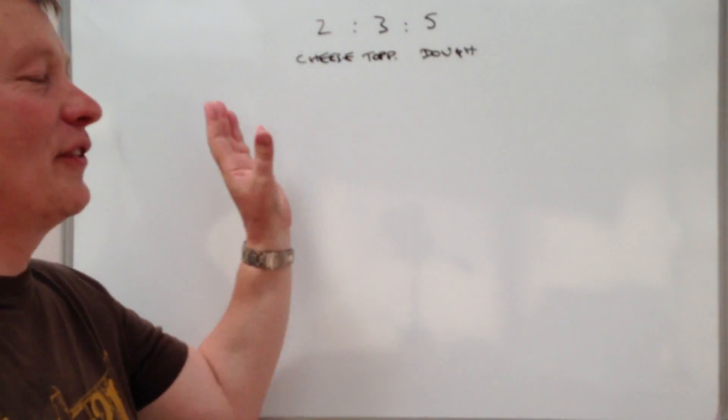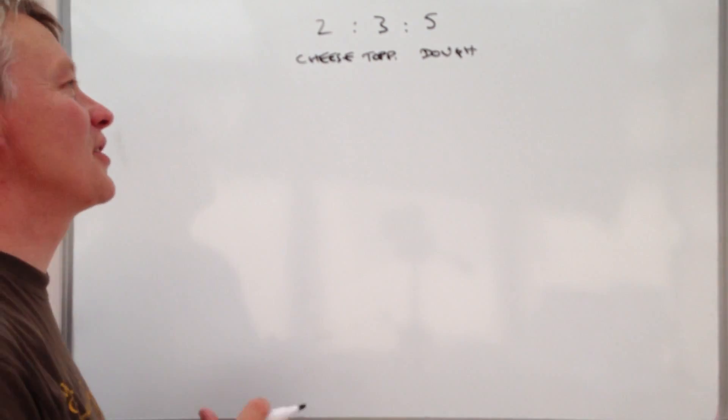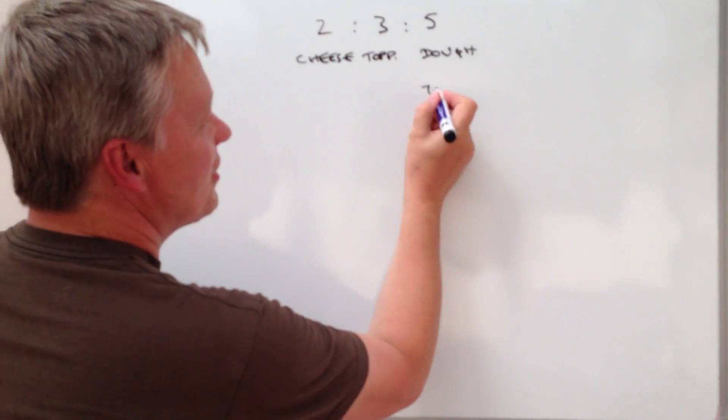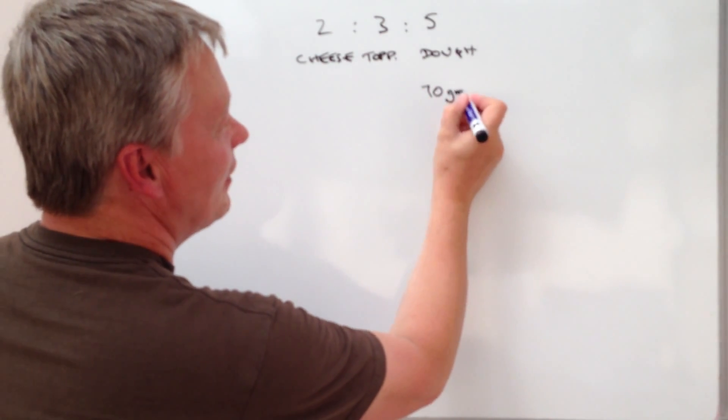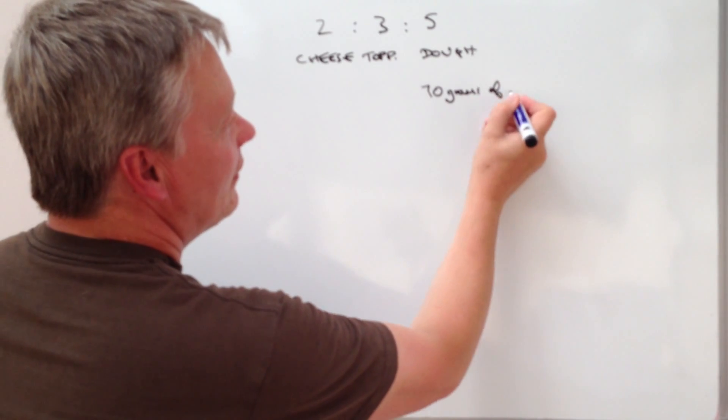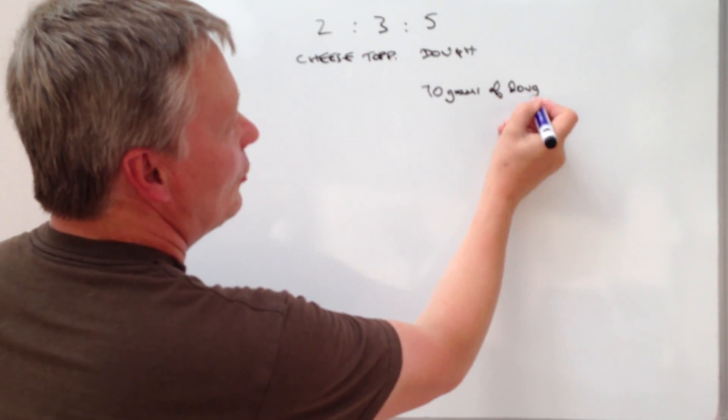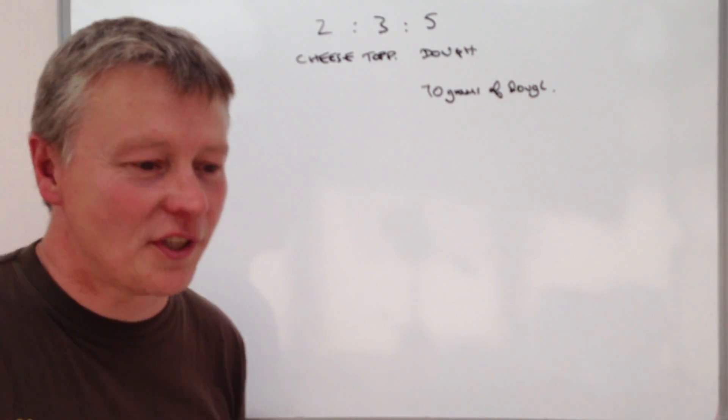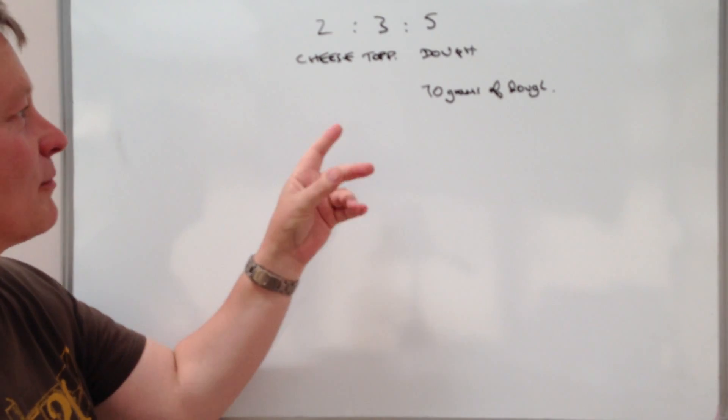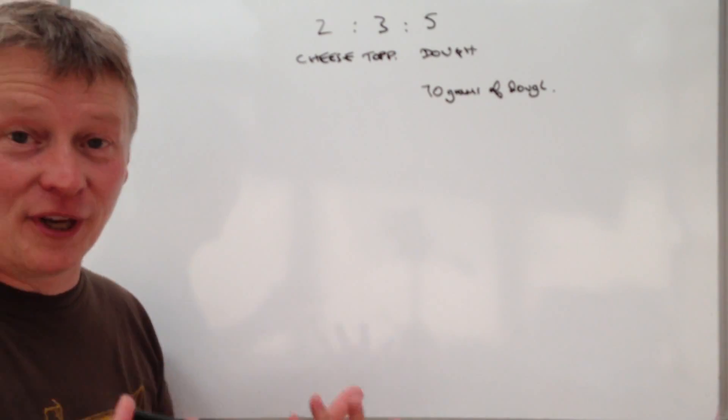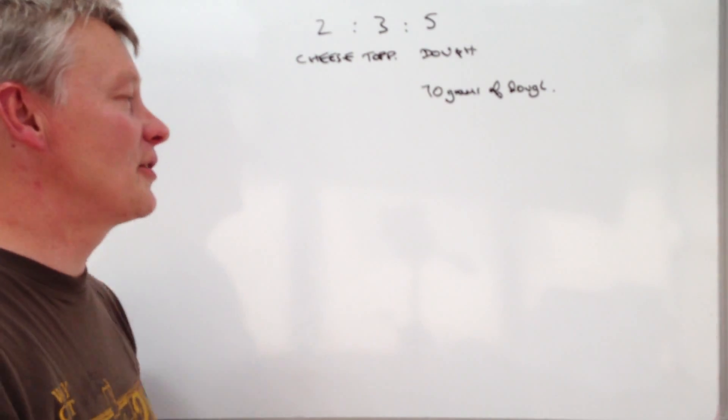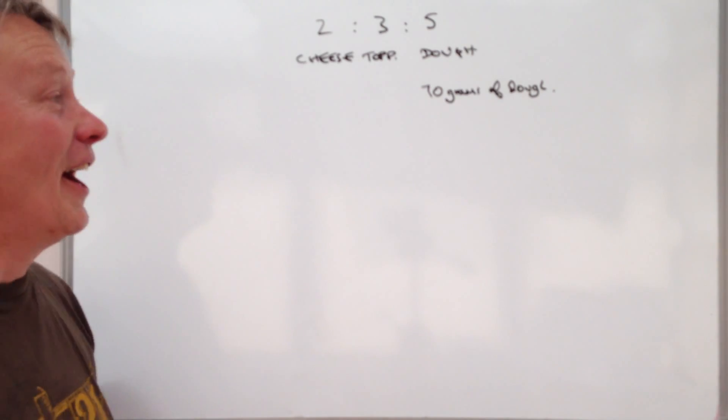...and five lots of dough. And with this particular pizza, this person has used 70 grams of dough, and what they want us to find out is how many grams of topping will this person use.